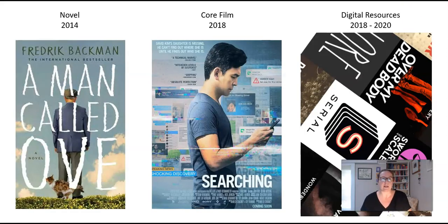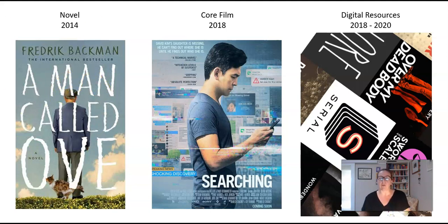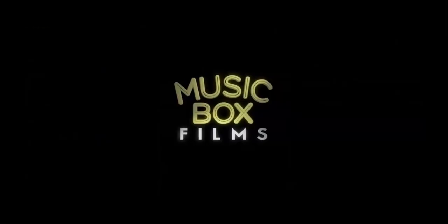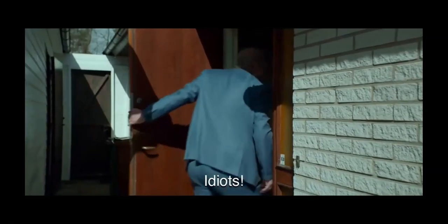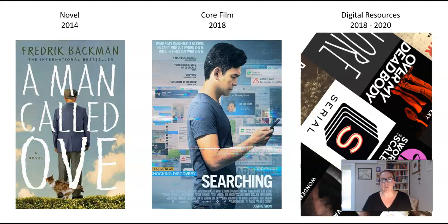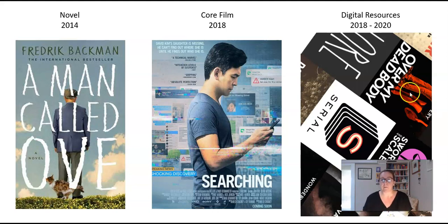Here are our core texts — they're all pretty contemporary. 2014 is our oldest one and it's going to be a novel; we'll either do the whole novel or excerpts. It's a great novel because it makes a lot of comments on modern technologies and how they've changed the world. Our core film is going to be 'Searching.' This is a really multimodal text — we have to listen to it, we have to view it, and within itself it uses a lot of multimedia. The whole thing is filmed on a computer screen, and it's about a father's search for his daughter, which hopefully links into HSC crime fiction as well.